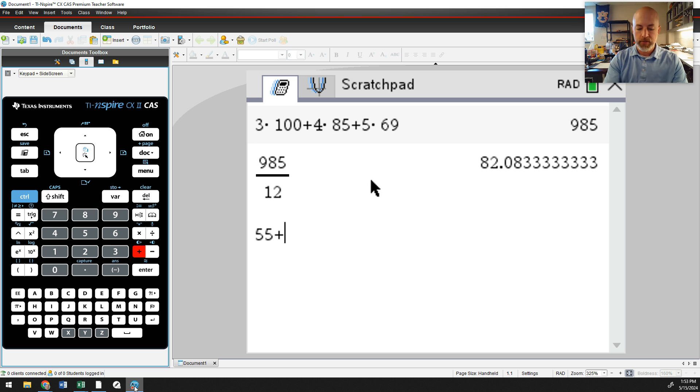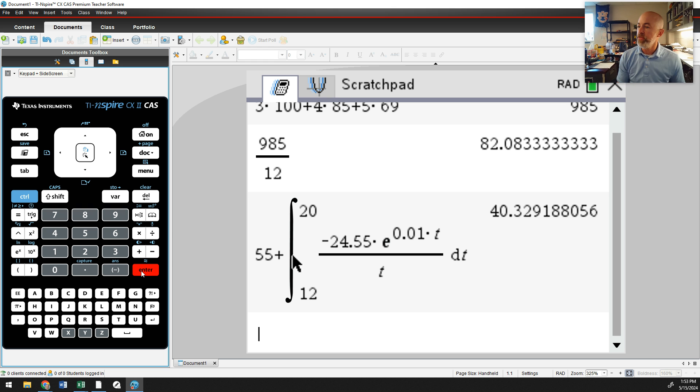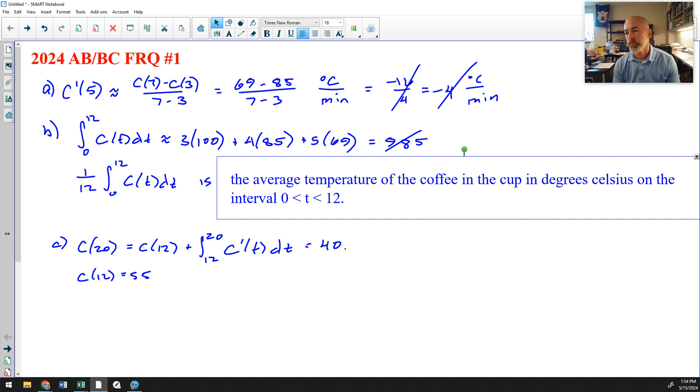So I have 55 plus antiderivative, shift plus, 12 to 20 of that ugly function. 24.55 E to the 0.01 T all over T DT. I'm double-checking that to make sure I punched everything in there correctly. It is 12 to 20, negative 24.55 E to the 0.01 T over T. Yeah, that all looks good. And I have a temperature of 43.40329. So far, I like this question. It's really wordy. The presentation of this problem is intimidating. It takes up an entire page here. But so far, I think this is a nice question.